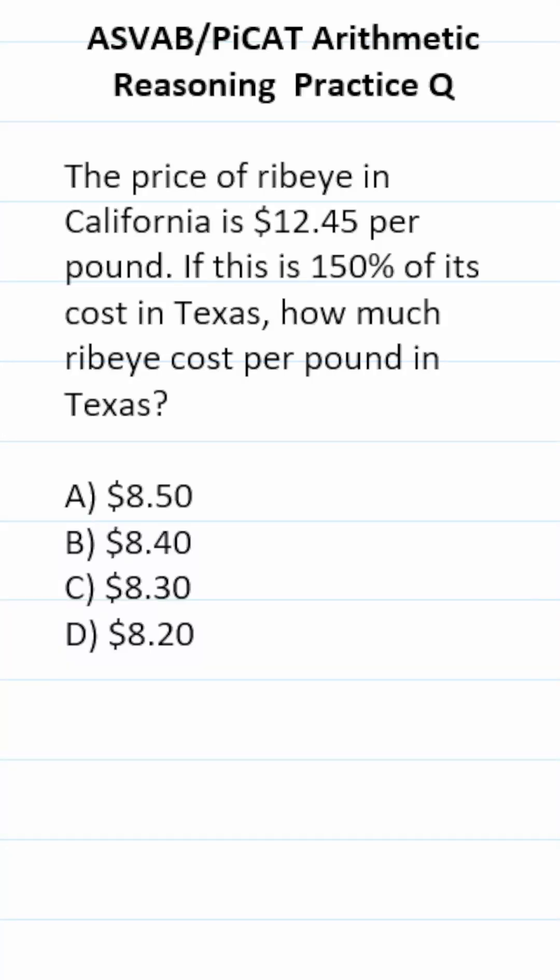ASVAB/PiCAT Arithmetic Reasoning Practice Test Question says: the price of ribeye in California is $12.45 per pound. This is 150% of its cost in Texas. How much does ribeye cost per pound in Texas?